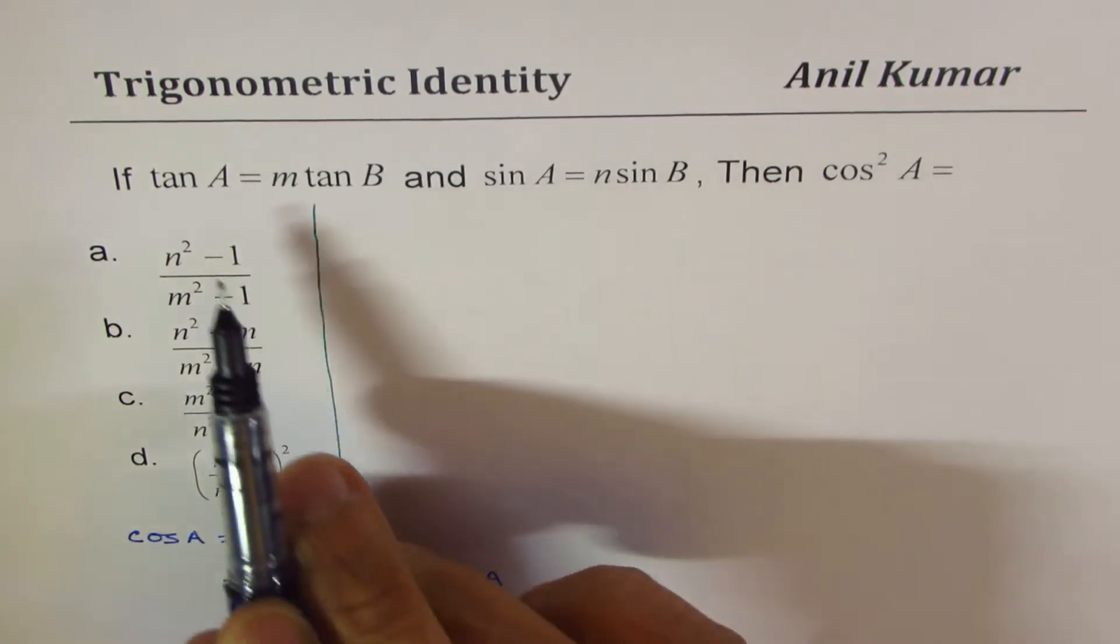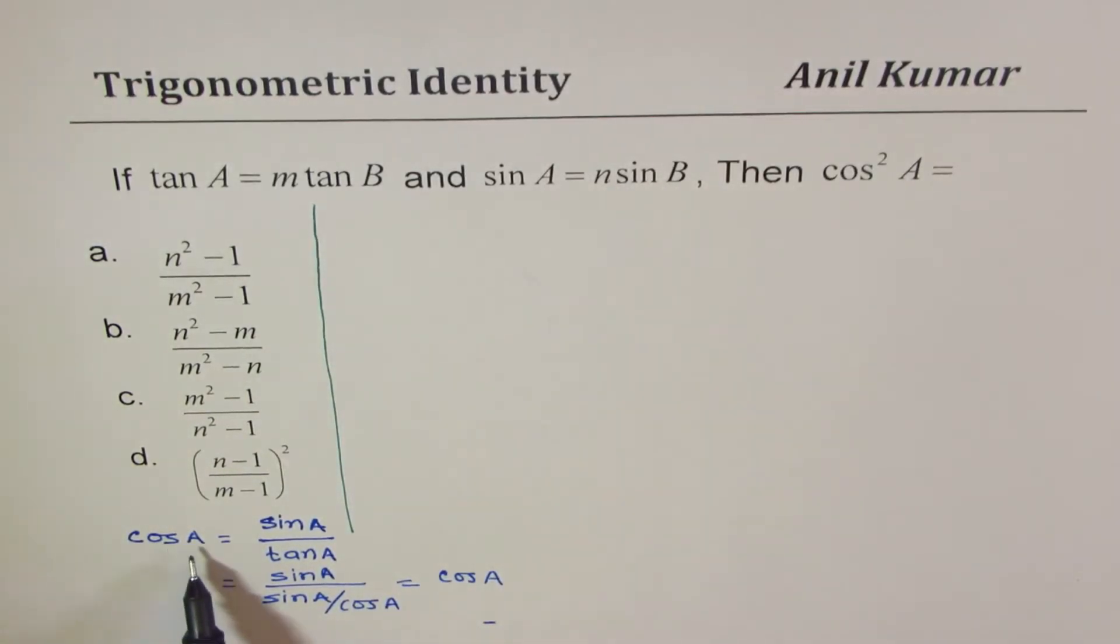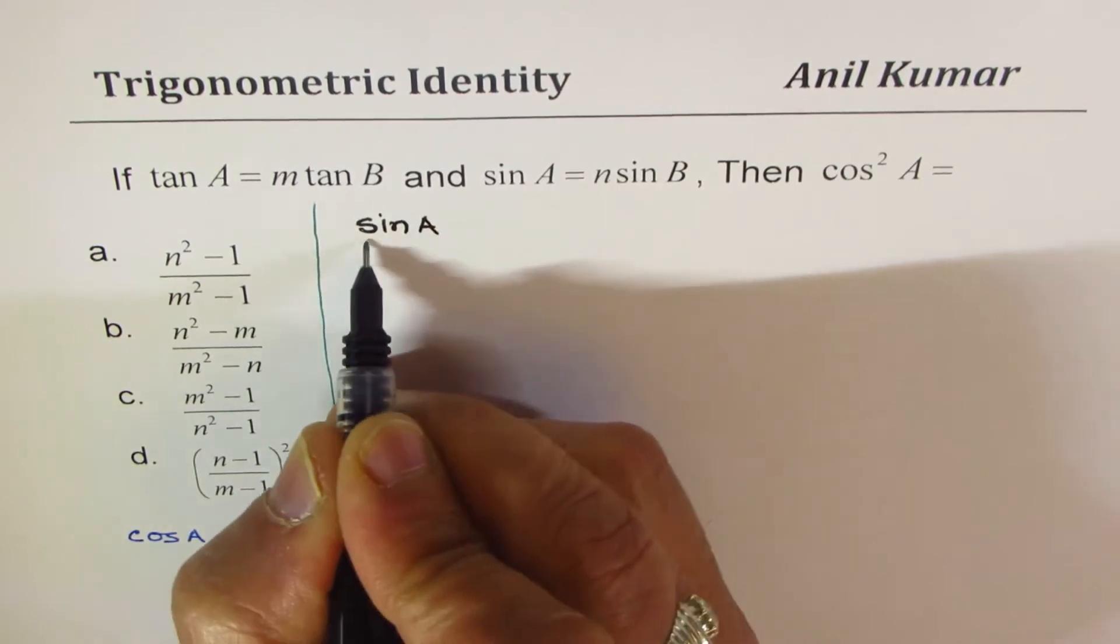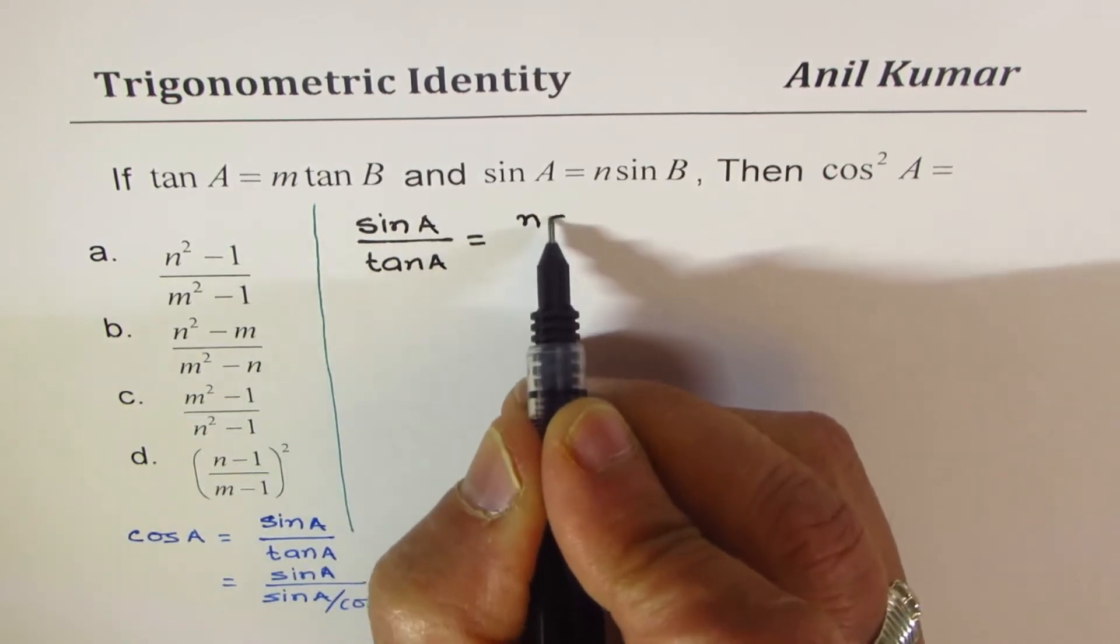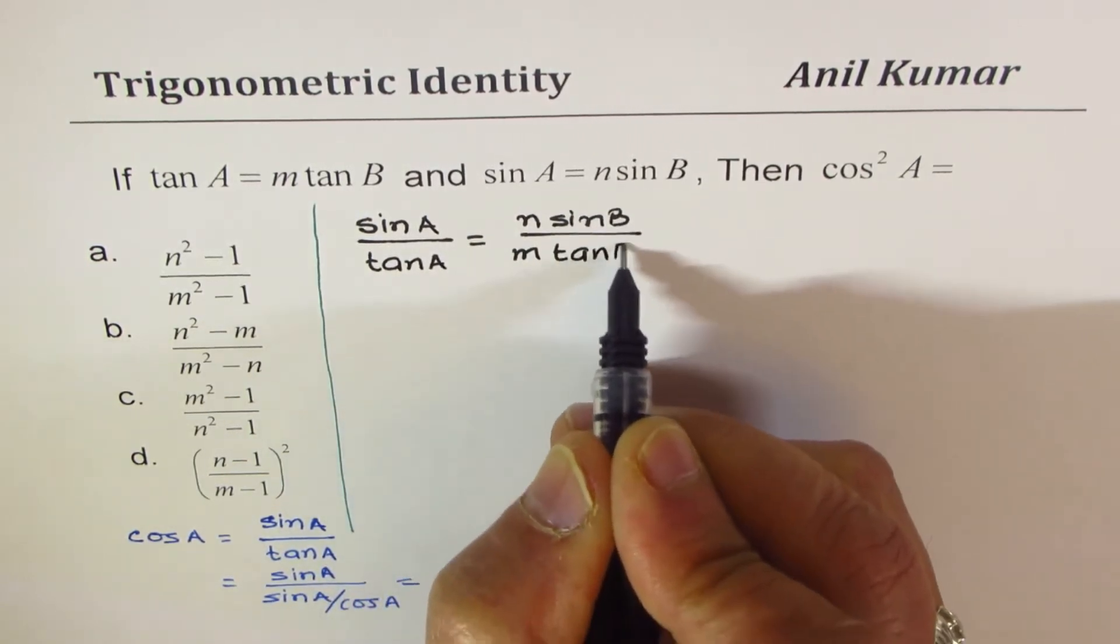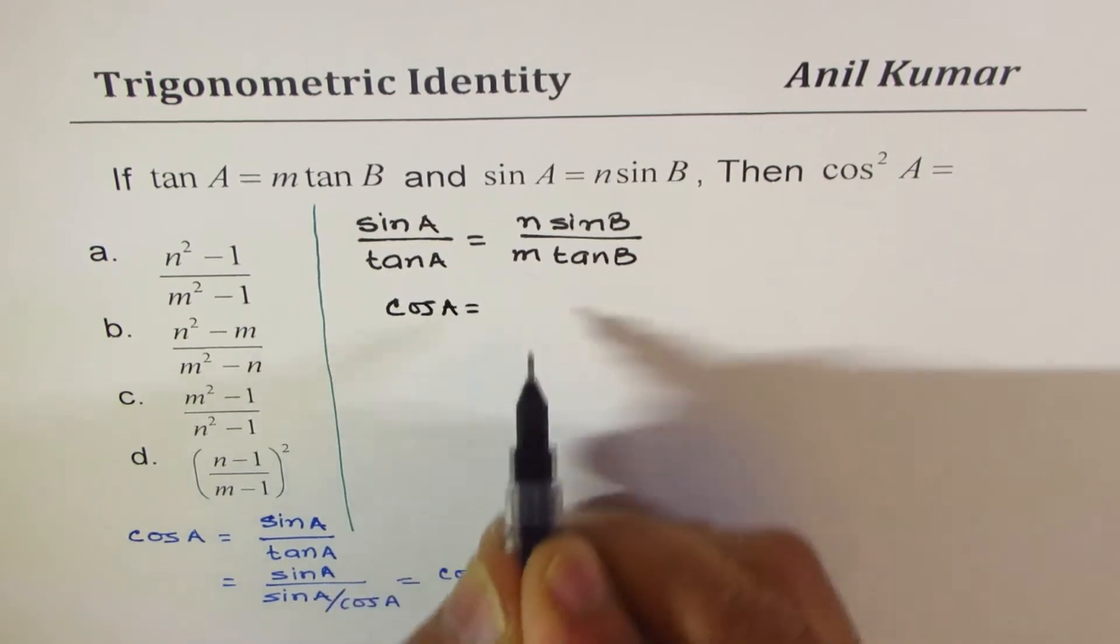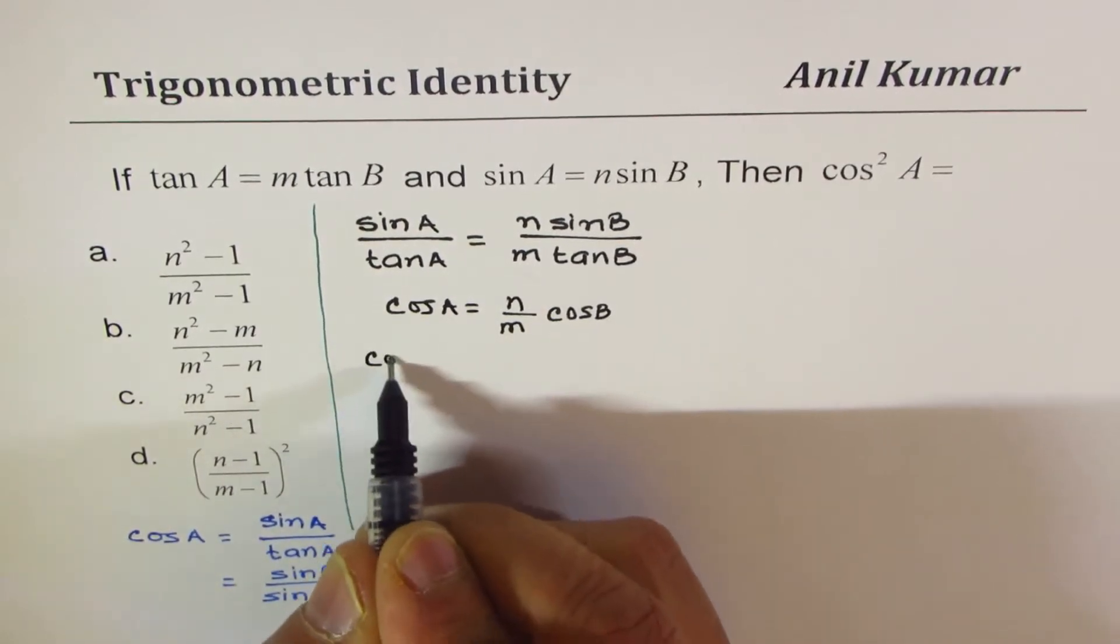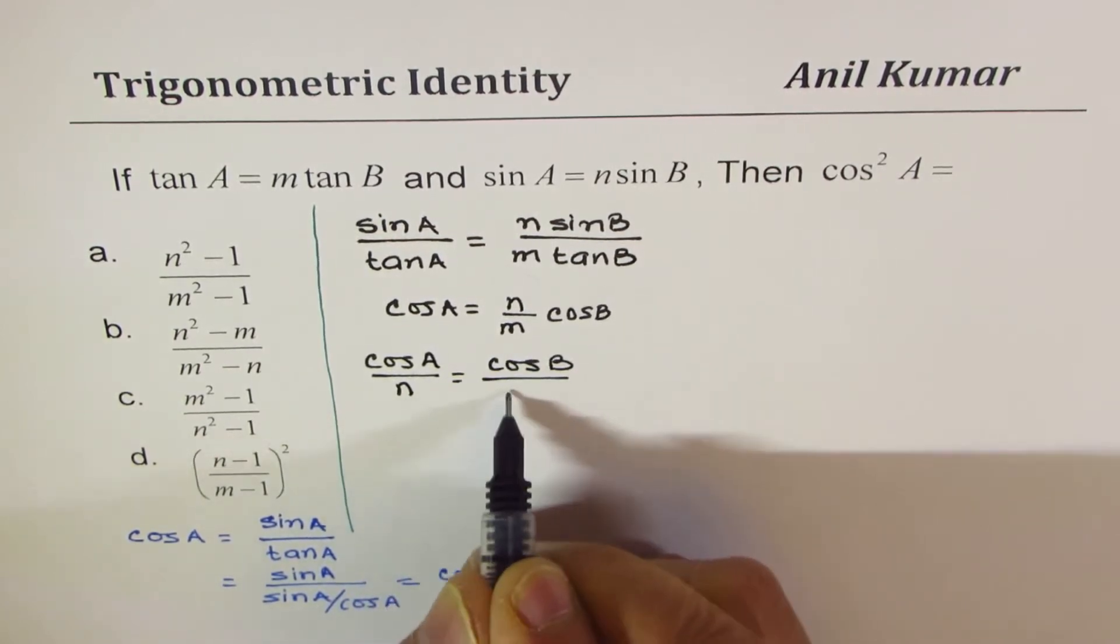We are given that tan A is m times tan B, sin A is n times sin B. We need to find what cos A is. So let me find the ratio of sin and tan. We can write sin A over tan A equals sin A is n times sin B, and tan A is m times tan B. So that gives you that cos A is equal to n over m cos B.